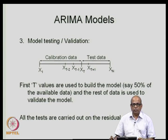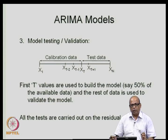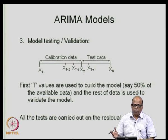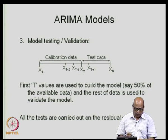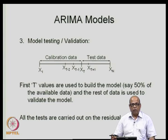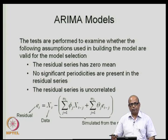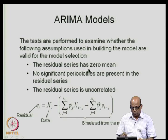On this E_t sequence we carry out validation tests. When we formulated these models, we wrote that the noise term E_t should have zero mean, should be devoid of periodicities, and should be uncorrelated. So we do three primary tests: (1) test that the E_t series has zero mean, (2) test that the series is devoid of any periodicities, and (3) test that the series is uncorrelated.